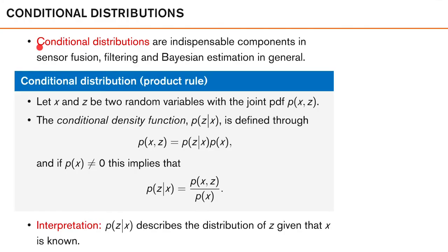We start by looking at conditional distributions, which are indispensable components in sensor fusion, filtering, and Bayesian estimation in general. We define them like this. Let x and z be two random variables with the joint pdf p of x comma z. The conditional density function, which you read as the probability density of z given x, is defined through the so-called product rule, which states that the joint probability of x and z can be written as the product of these two densities.